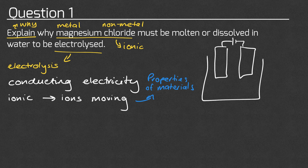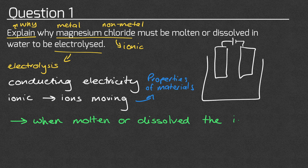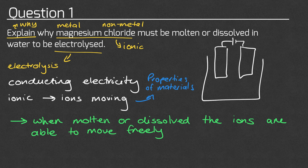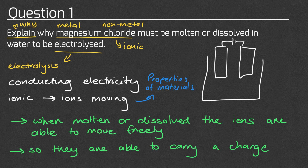So we can use that to write an answer to this question. When molten or dissolved, the ions are able to move freely. Therefore, they are able to carry a charge, and that will be our answer. We don't need to explain why they can't conduct when solid, but that knowledge helps us understand why they can conduct when molten or dissolved.